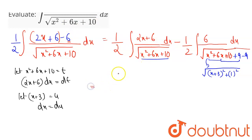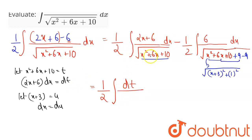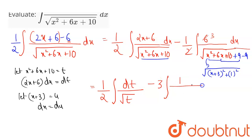Now let us substitute these values. One-half times the integral of — since (2x + 6) dx is dt — dt divided by the square root of t, minus of now 2 times 3 is 6, so I am taking the constant outside of this integration. This symbol is integral: 1 divided by the square root of — since x plus 3 is u, I can write this as u squared plus 1 squared — into du.